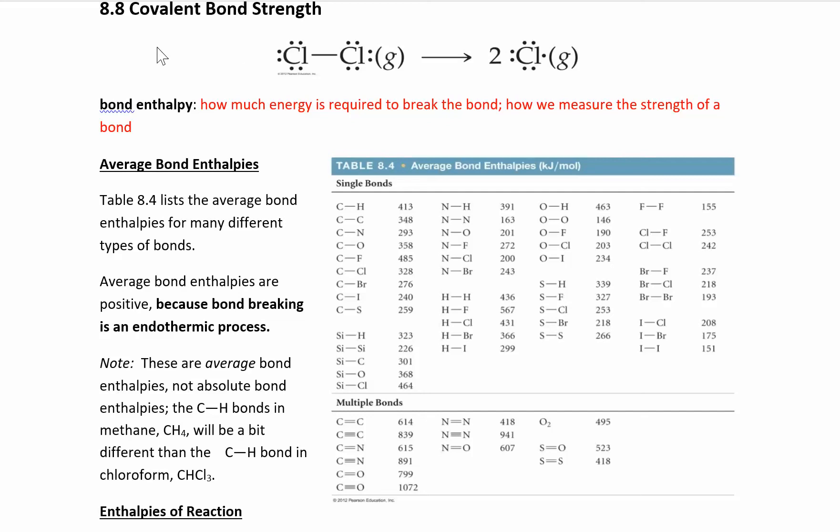Our last section in this chapter is on covalent bond strength, also called bond enthalpy. It's how much energy it takes to break a bond, and it's really a measure of how strong the bond is. In this reaction, we're breaking the Cl-Cl bond and making two separate chloride ions. There's a certain amount of energy required to break that bond.